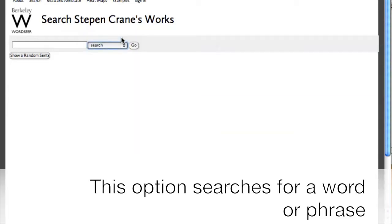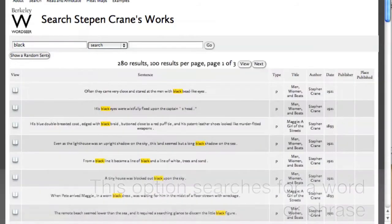Notice that this makes the right-hand side box go away. I can simply type in a word or phrase to search for occurrences of that word or phrase in the text. In this case, I'm typing in the word black.